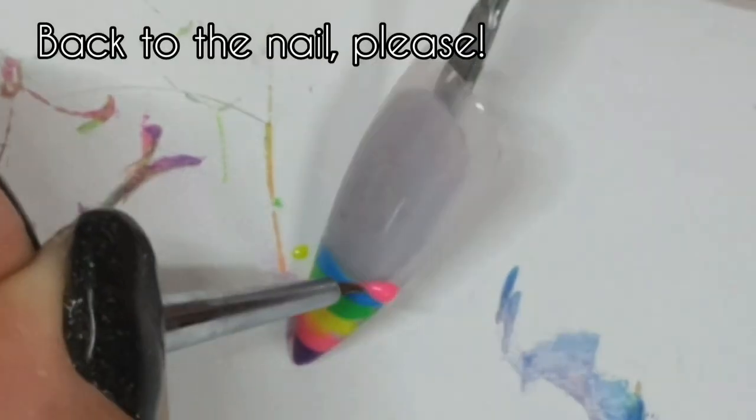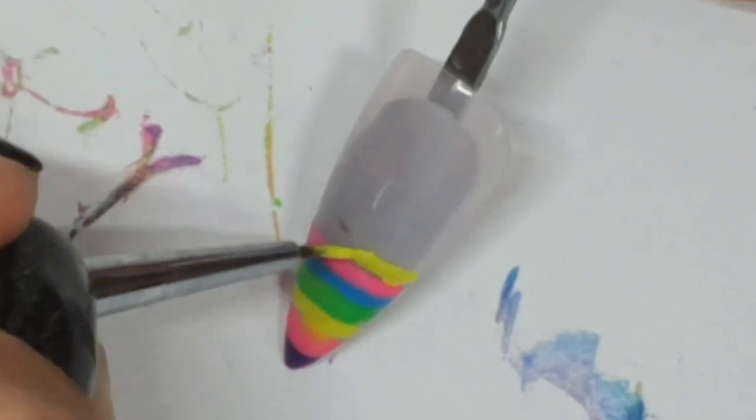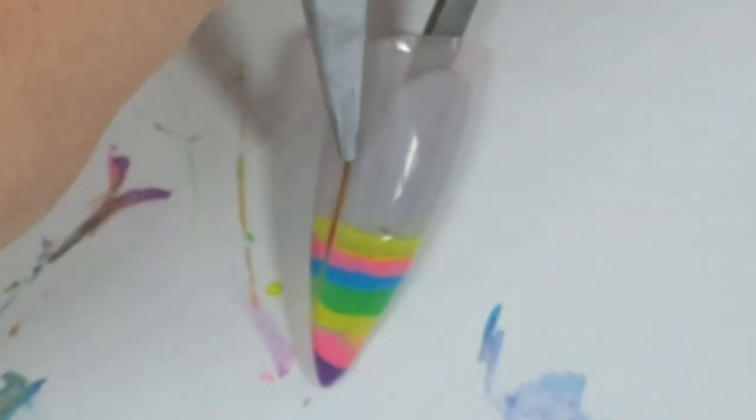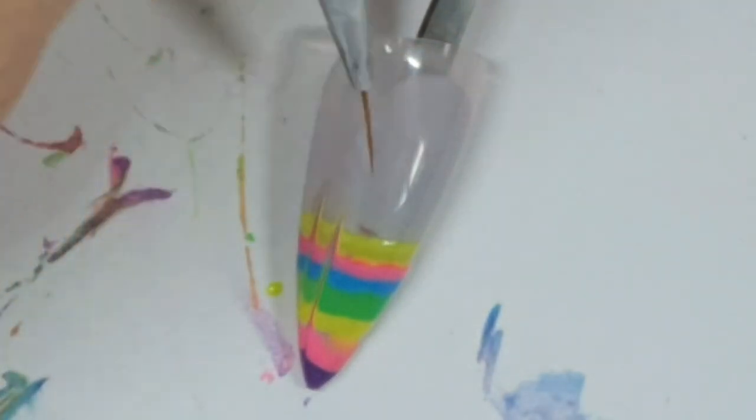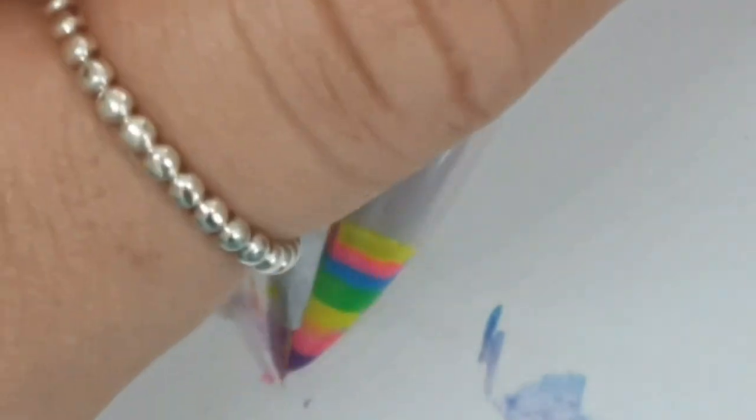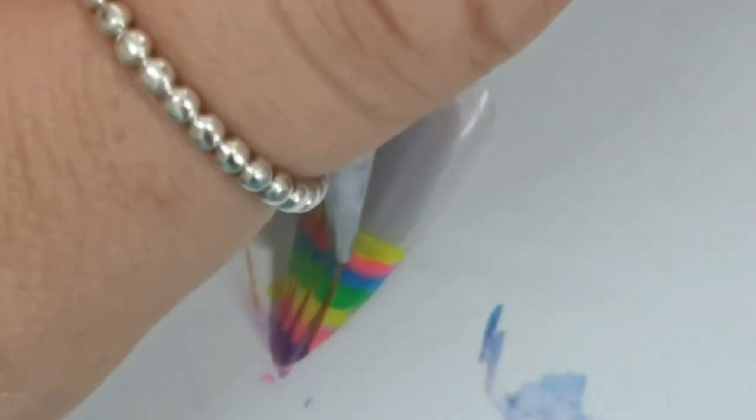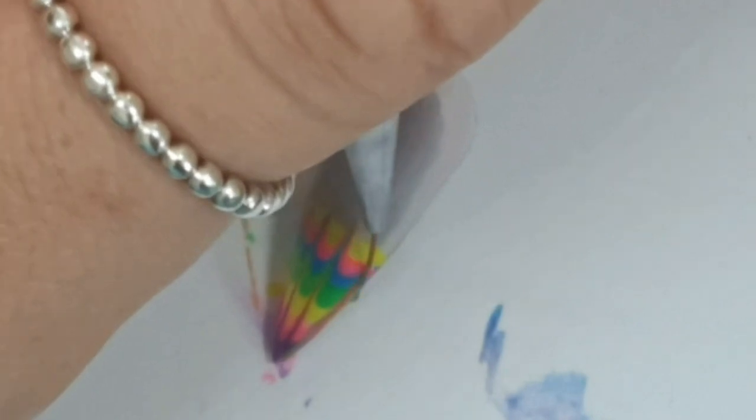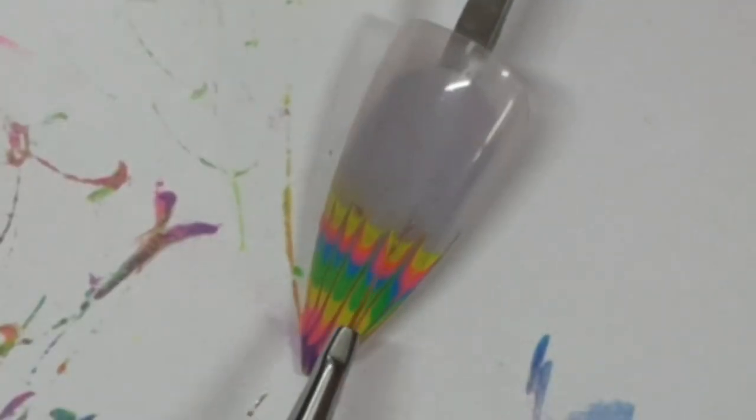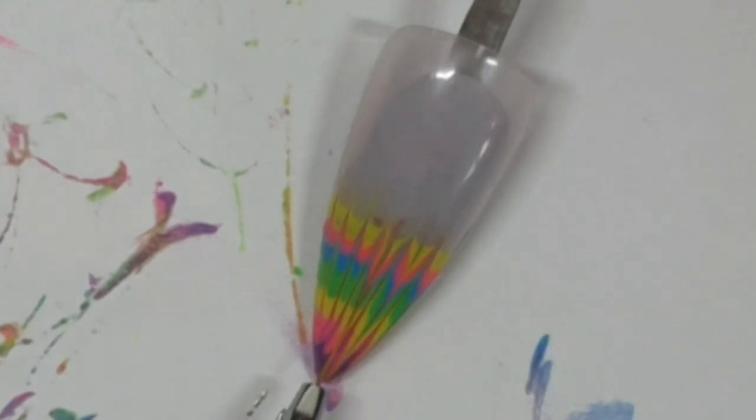So, this nail has had a coat of sheer pink, and then I'm just lining these colours up again, and dragging up, and then I'll go down in between them, so it hasn't been cured. I probably shouldn't have done them as close to each other, the lines, because this bit was a bit, there wasn't much room to do it.